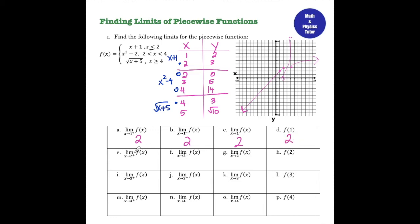For the limit as x approaches 2 from the right, I'm looking at numbers greater than 2 and coming this way. As I approach x equals 2 from the right I'm getting closer and closer to 0, so my answer is 0. For the limit as x approaches 2 from the left, I'm coming from values less than 2, so I approach the value of 3. Since the limit from the right is not equal to the limit from the left, the limit as x approaches 2 does not exist — that's a DNE. For f of 2, the value of the function at x equals 2, I go by the colored-in dot, which is 3.